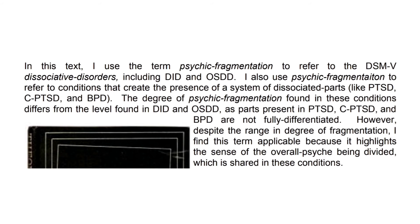In this text, the term psychic fragmentation refers to the DSM-5 dissociative disorders including dissociative identity disorder and otherwise specified dissociative disorder. The term is also applied to conditions that create a system of dissociated parts, such as post-traumatic stress disorder, complex PTSD, and borderline personality disorder. The degree of psychic fragmentation in these conditions differs from DID and OSDD, as parts in PTSD, CPTSD, and BPD are not fully differentiated. Nevertheless, the term is applicable because it highlights the sense of the overall psyche being divided, which is shared across these conditions.